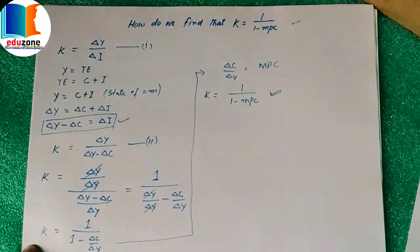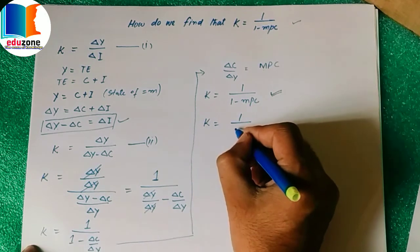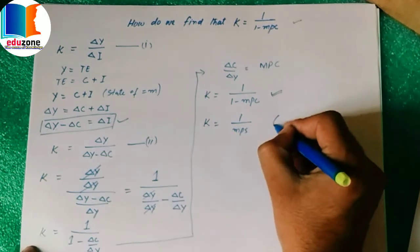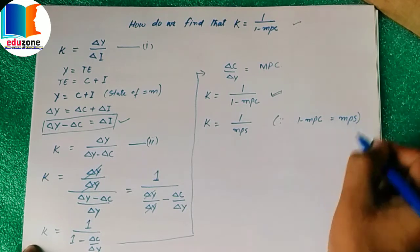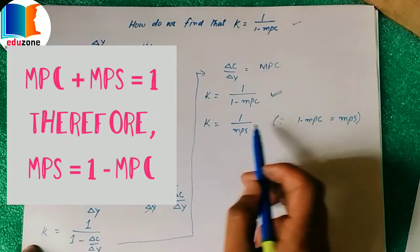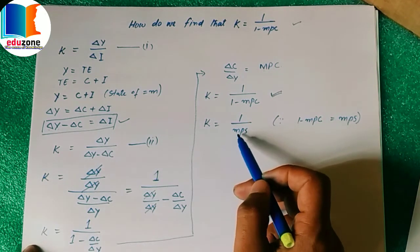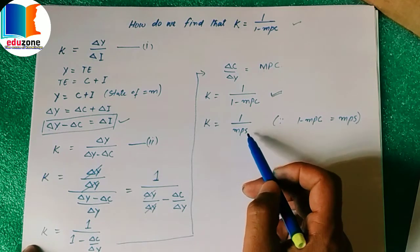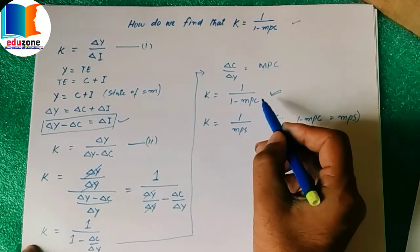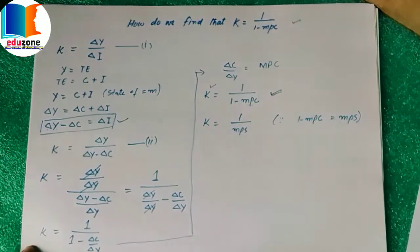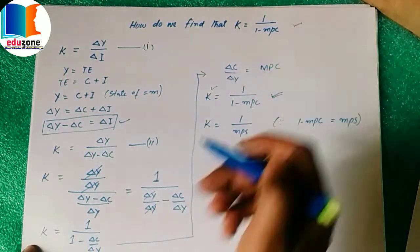This equation can also be rewritten as K = 1 / MPS, because we know that 1 − MPC = MPS. This implies that the multiplier is the reciprocal of the marginal propensity to save. Therefore, higher the value of MPS, lower will be the value of K. Conversely, higher the value of MPC, higher will be the value of K. This was all about the formula for finding the multiplier K.